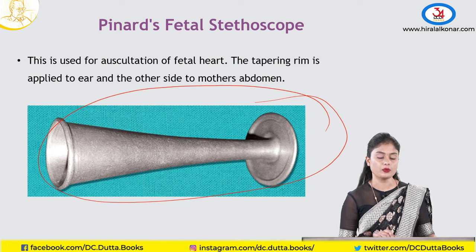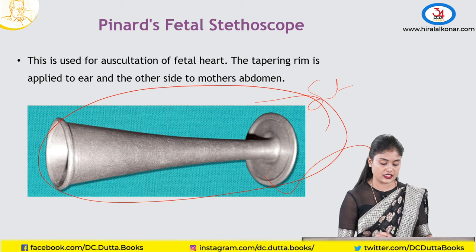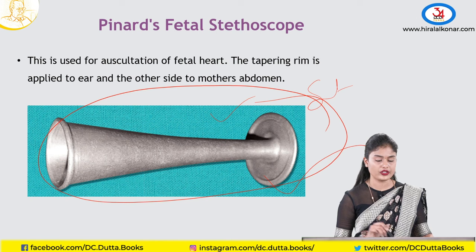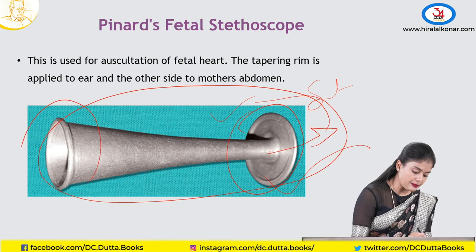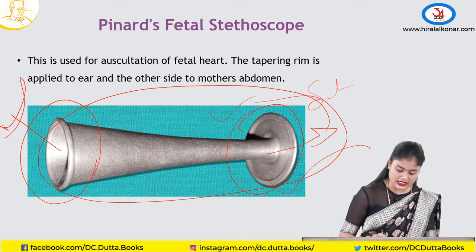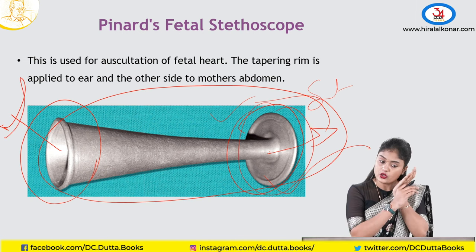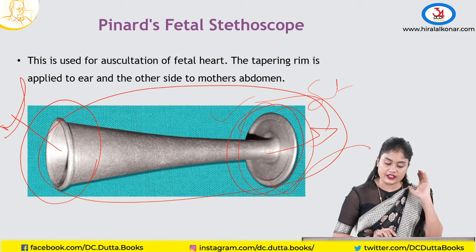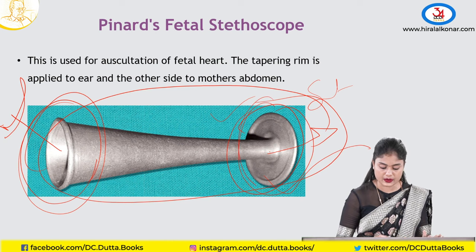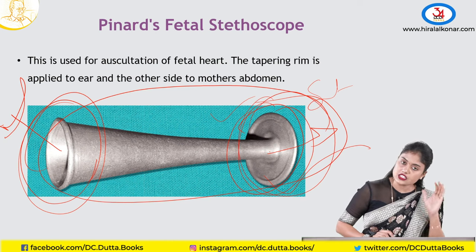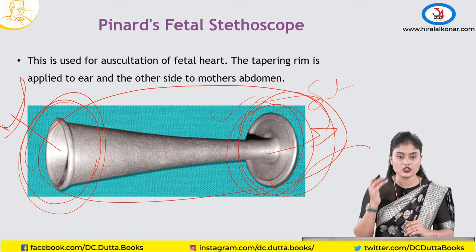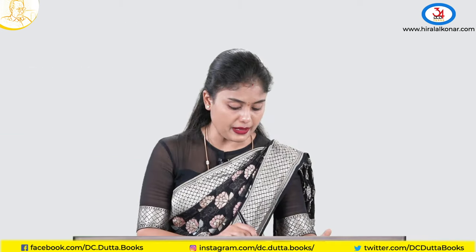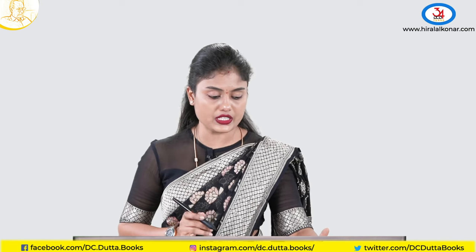Coming to Pinnard's fetal stethoscope. This is no longer commonly used — nowadays we use a normal stethoscope. The tapering rim is applied to the ear while the other side is placed over the maternal abdomen. You must not touch the instrument while listening to the fetal heart sounds, as it will mask them — just slightly slant and listen.